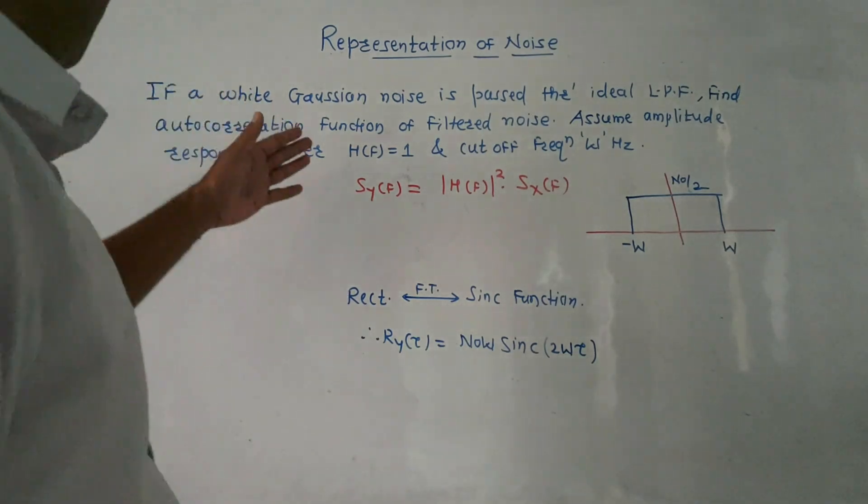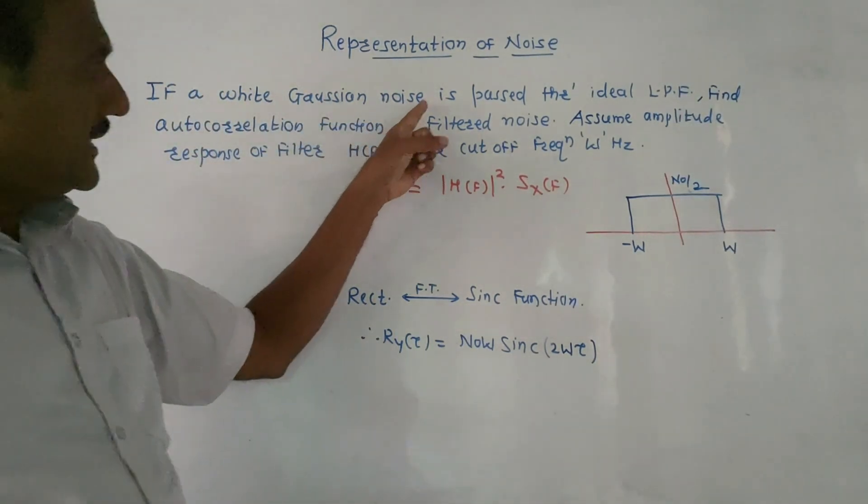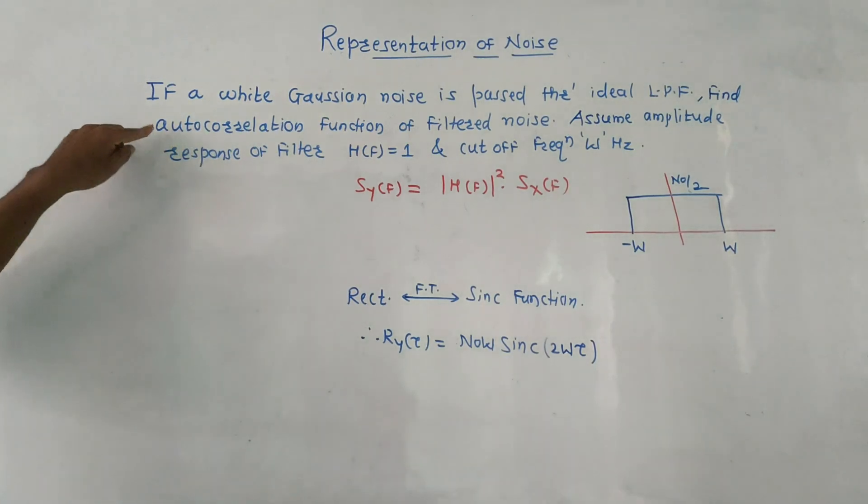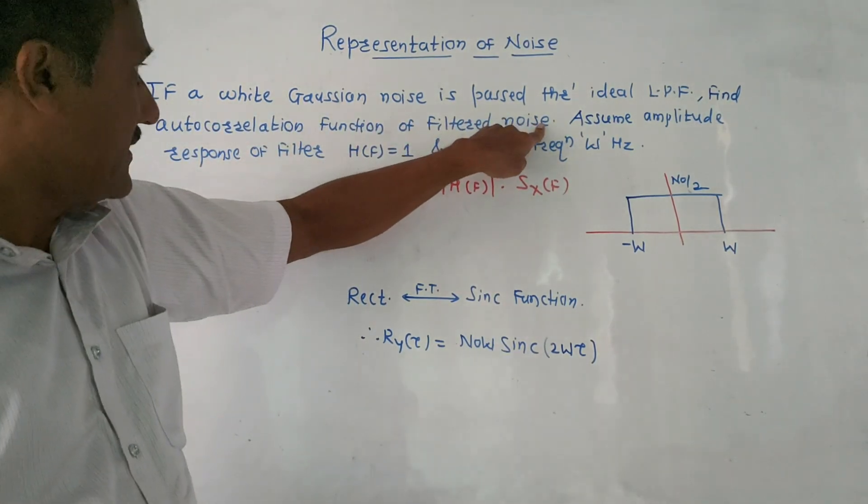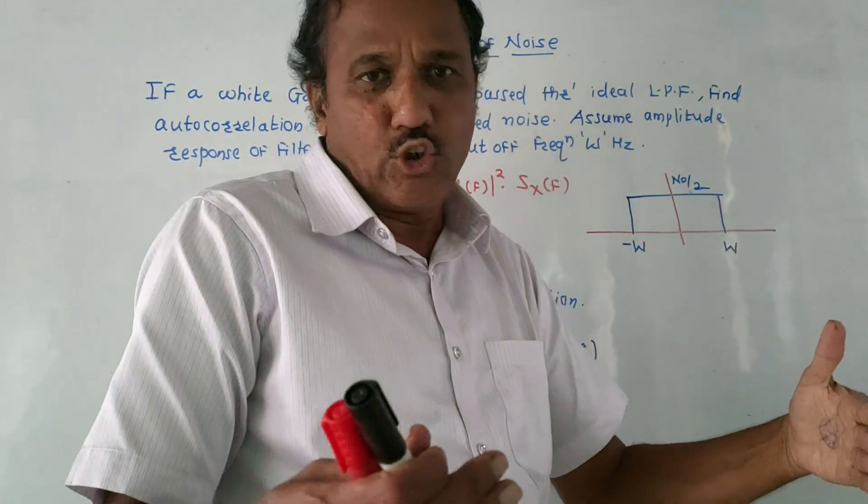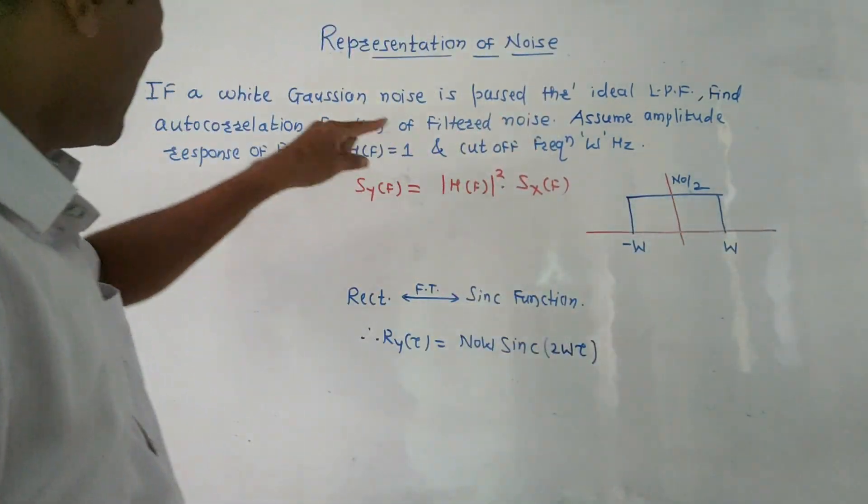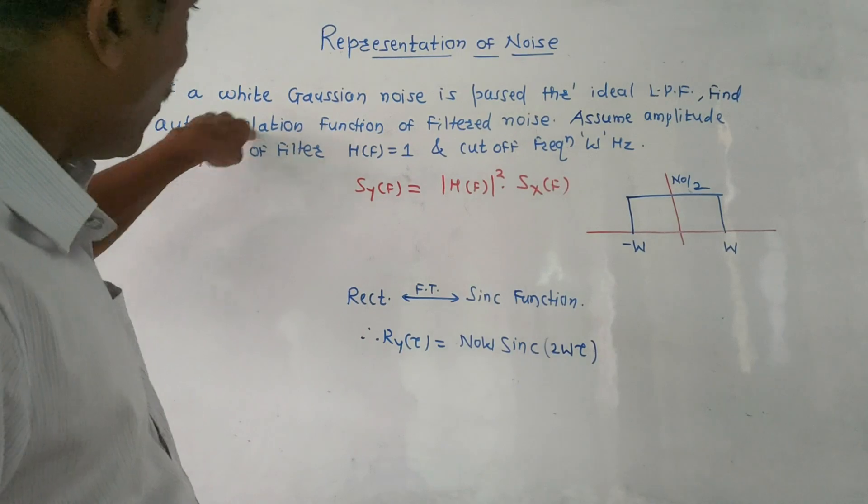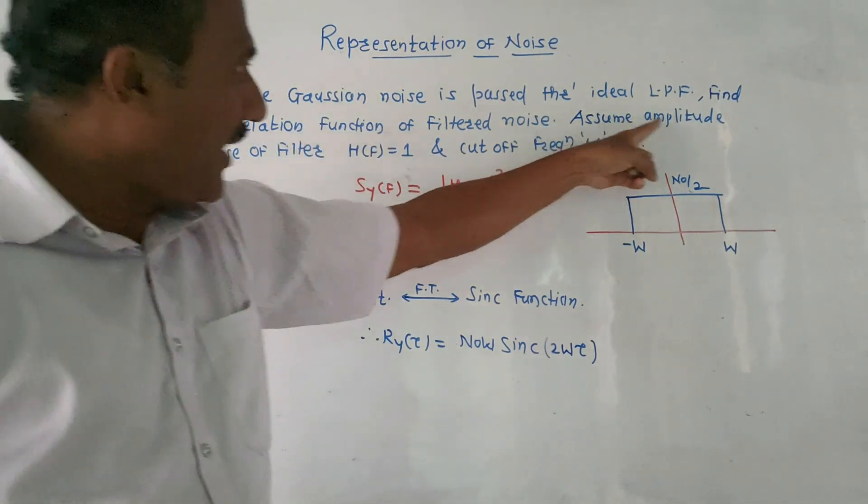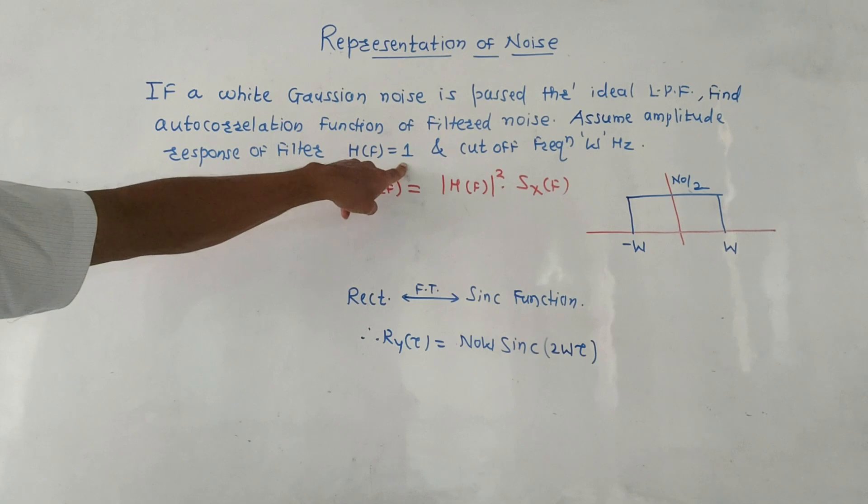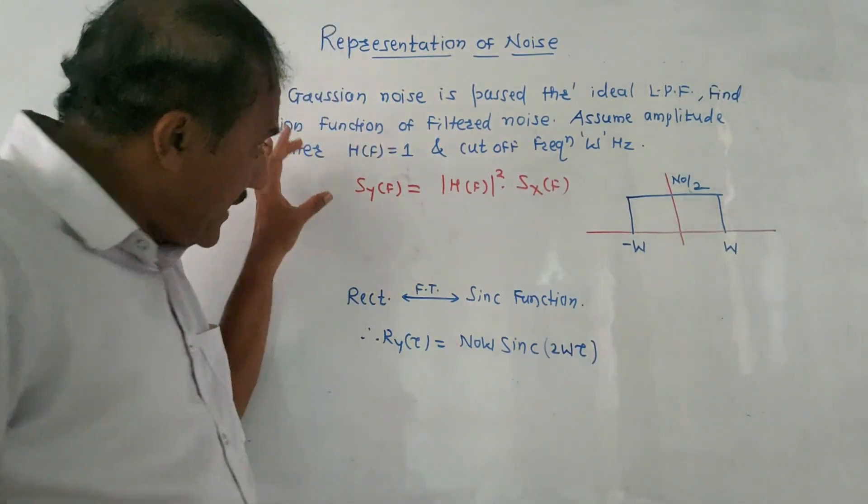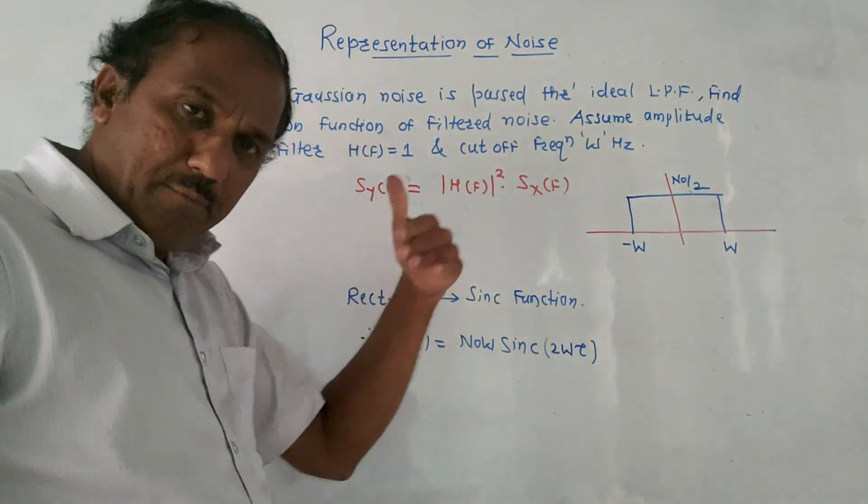Now let us solve a numerical. If a white gaussian noise is passed through ideal LPF - LPF is low pass filter - find autocorrelation function of filtered noise. The white gaussian noise, which we have discussed, its amplitude is N0 by 2, which is passed through the ideal low pass filter. Find autocorrelation function of the filter noise, filter output.